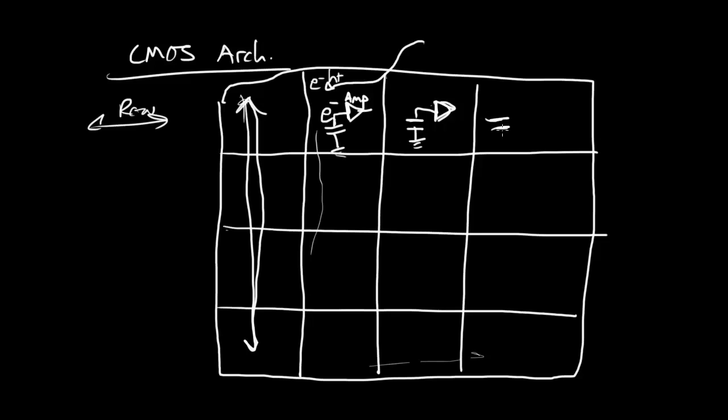Each pixel has its own capacitor where it integrates. This is the integration capacitor, integration capacitor, and it has its own amplifier.